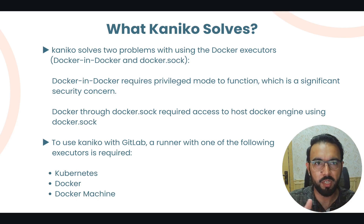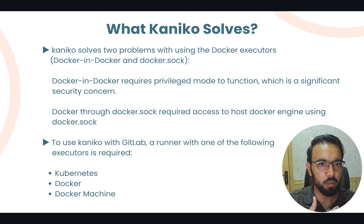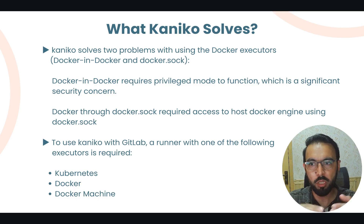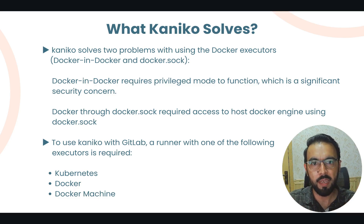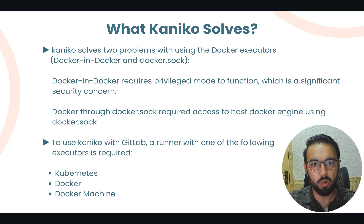To summarize: to use Kaniko with GitLab, you need either a Docker executor, a Kubernetes executor, or a Docker machine — but you don't need access to the host Docker engine or Docker-in-Docker. Kaniko picks each instruction from the Dockerfile one by one and runs it in the user namespace without accessing the Docker engine.